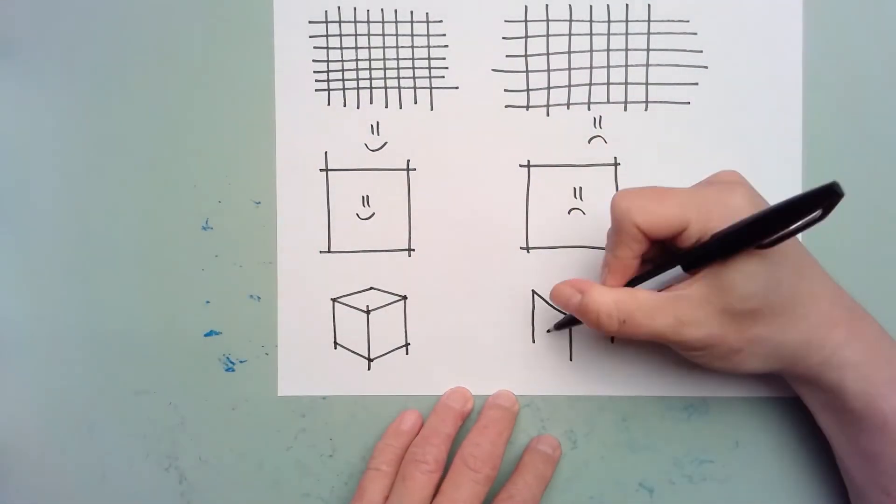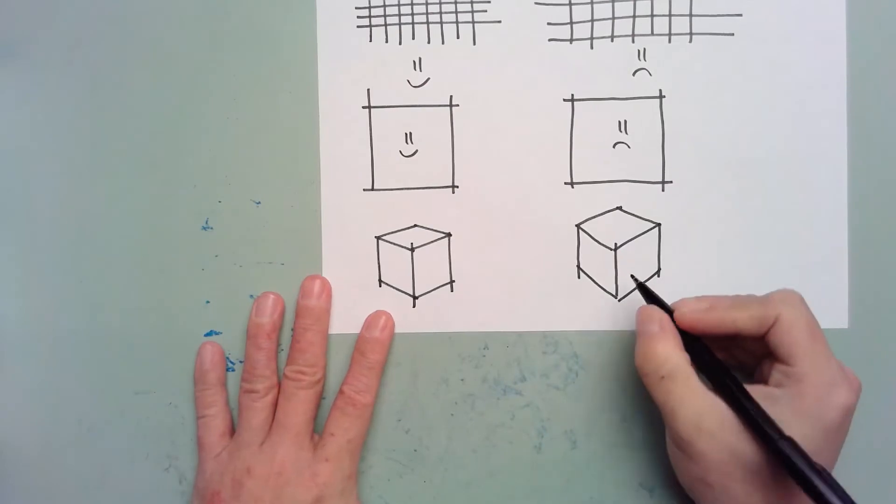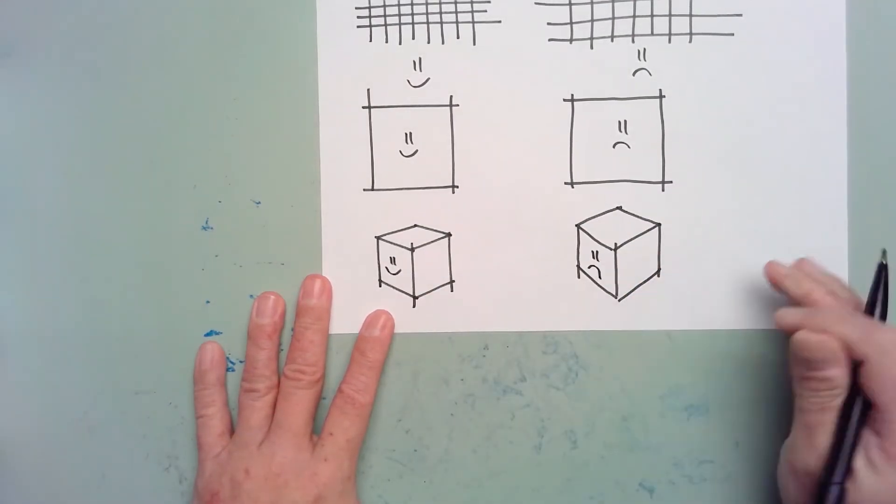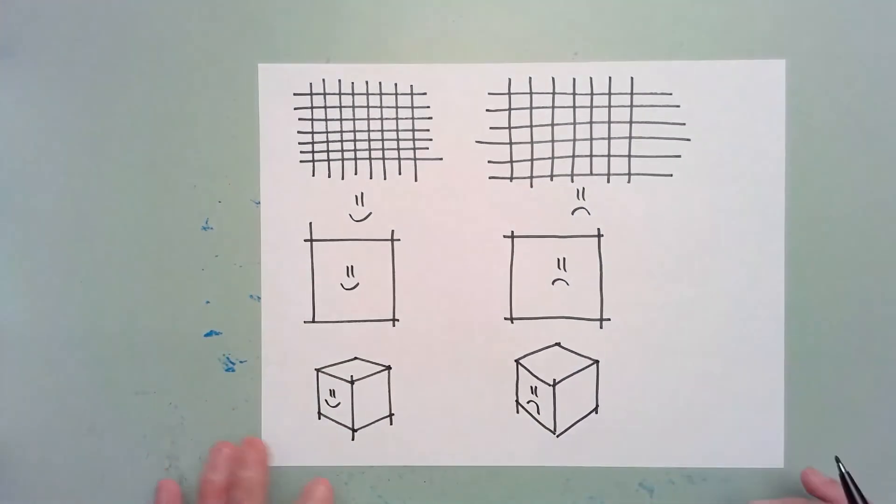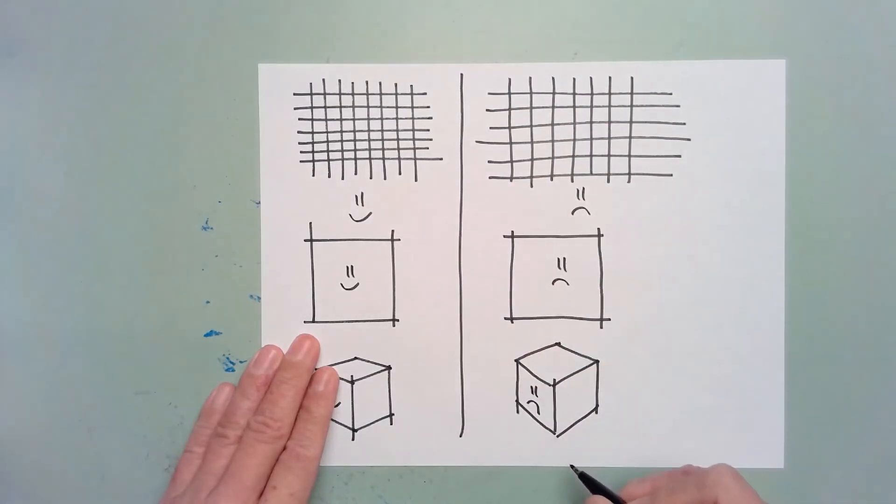In the right column, you will notice that I do use a proper pen grip and locked wrist, but I make no effort to spin the paper while consistently sketching toward my body. The difference in drawing quality between the two columns is quite noticeable, especially with regard to the cubes.